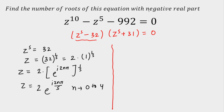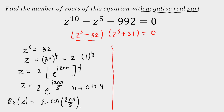What we want is the number of roots with negative real part, so there is no need to calculate each root explicitly. All we have to do is check the real part of z. The real part will be 2 times cos(2nπ/5), and we only need to determine whether it is negative. The sign of the real part is decided by cosine, and cosine is negative only in the second and third quadrants.